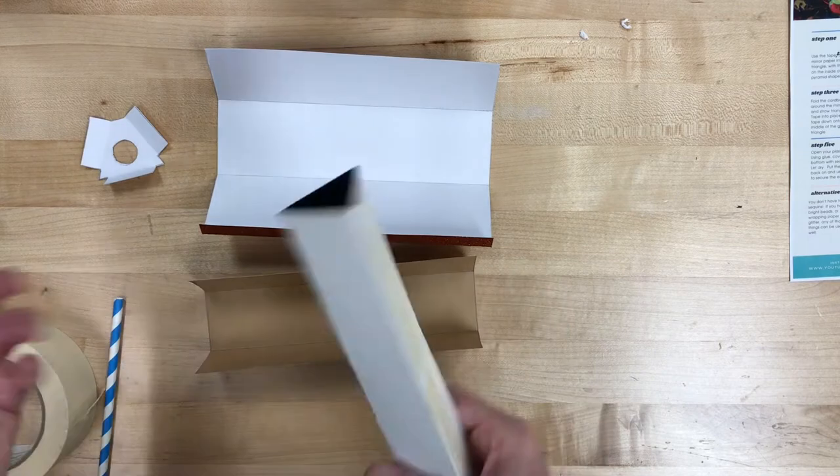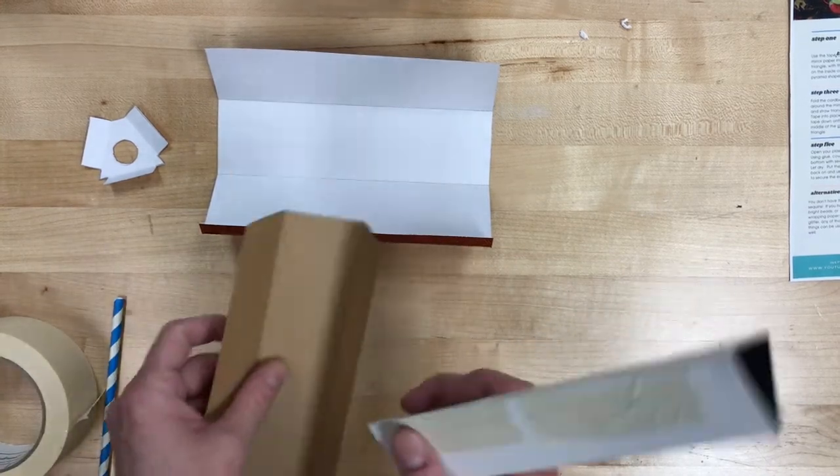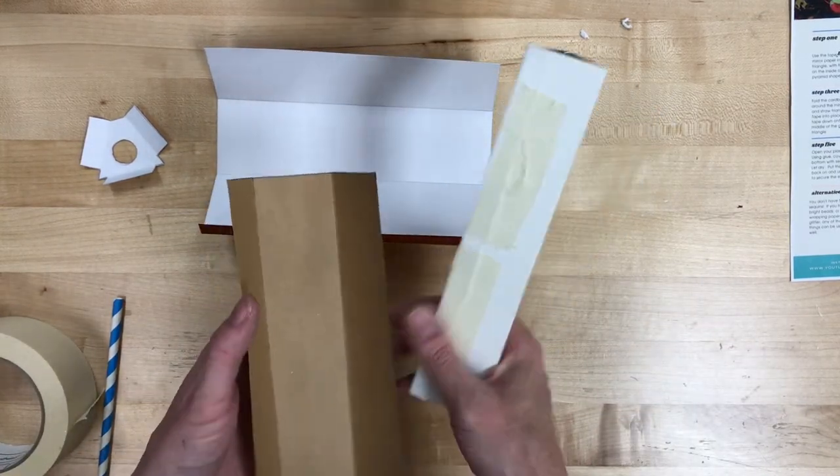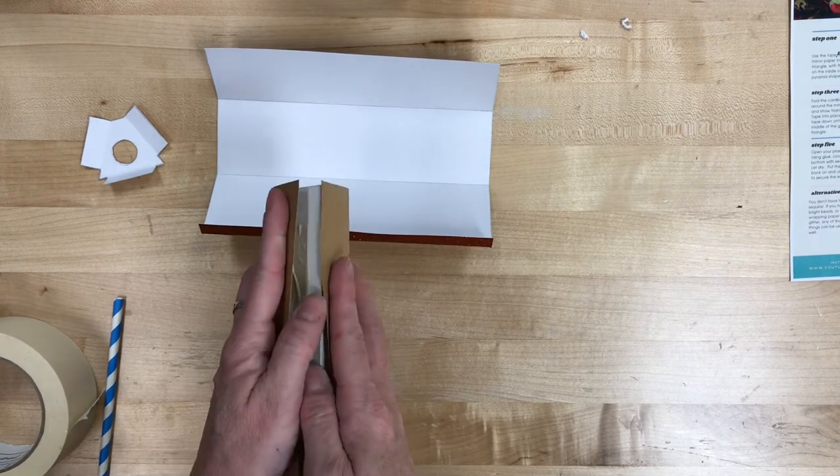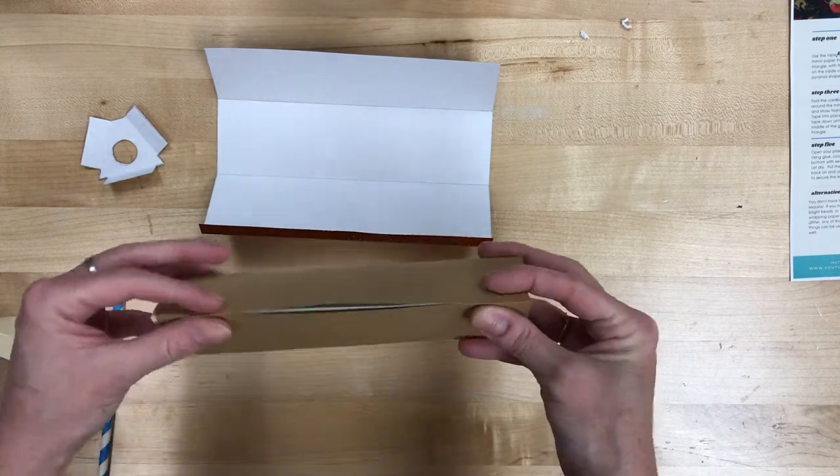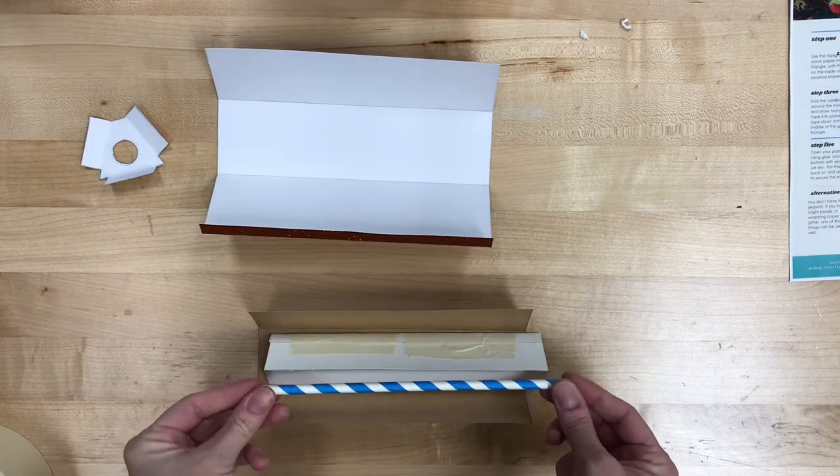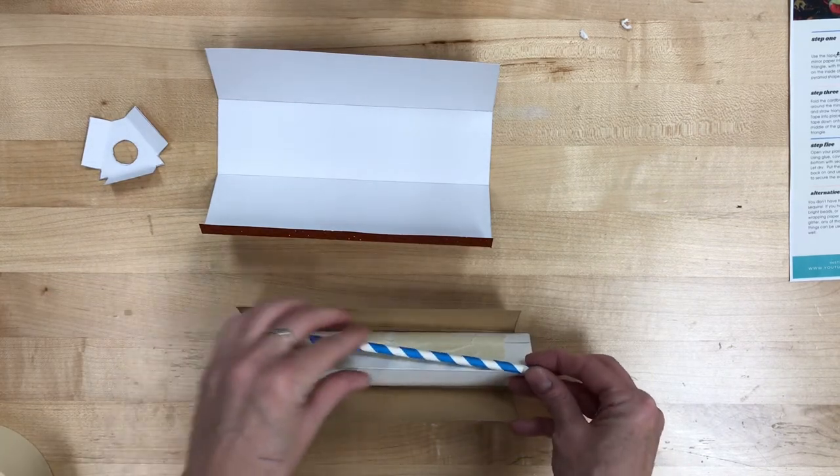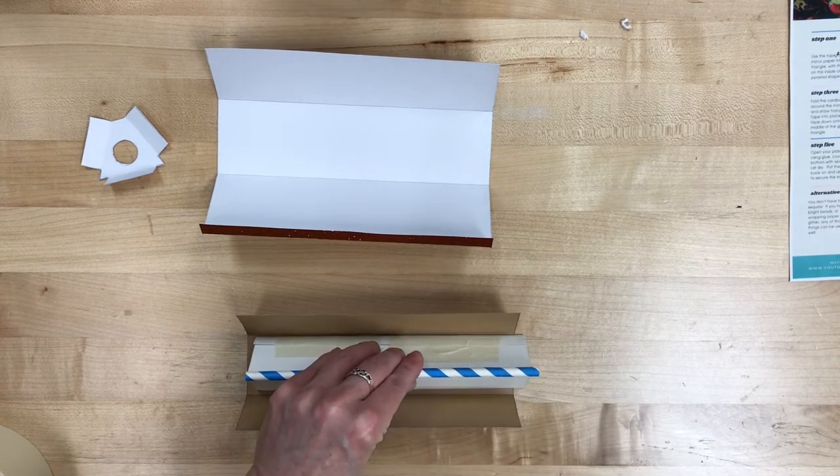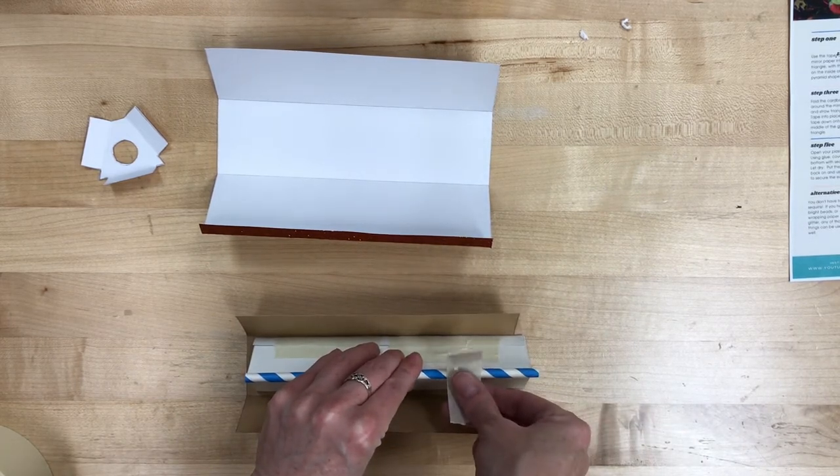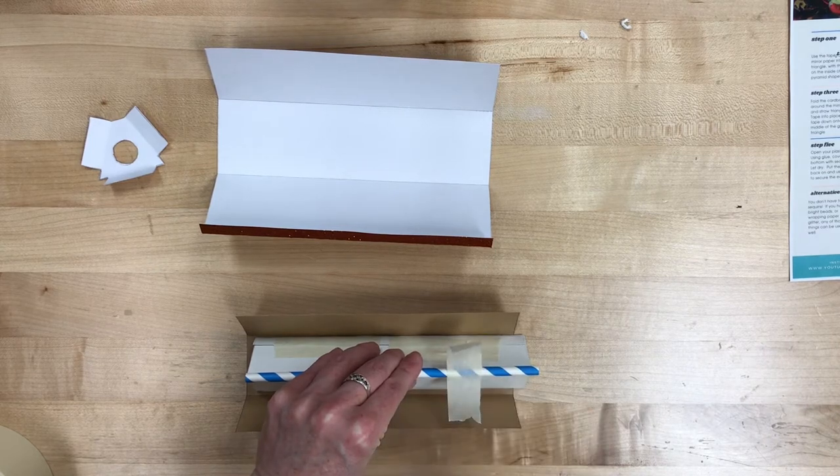There we go. Next, we are going to basically wrap the cardboard around that reflective paper. But the trick to this one is we got to bring in that paper straw. And it needs to balance on top of the point of that pyramid shape. The easiest way to do this is to put it right where you want it, and then tape it in place.